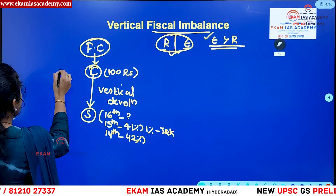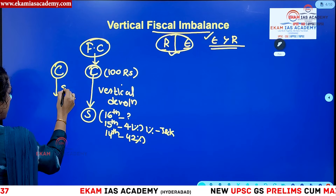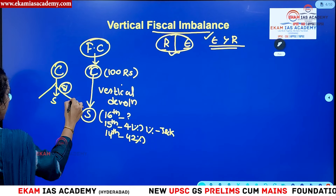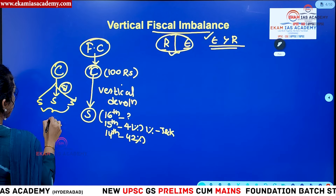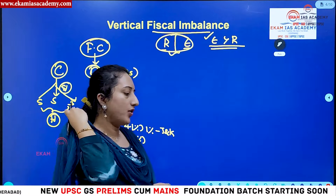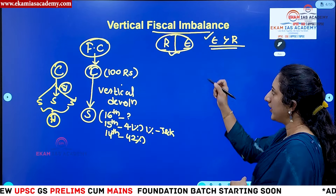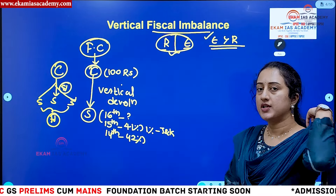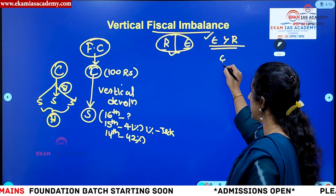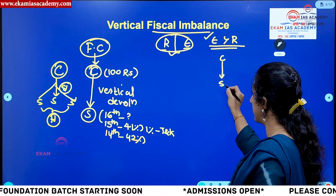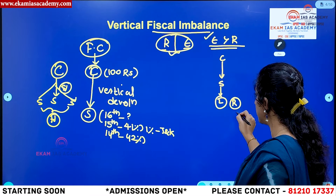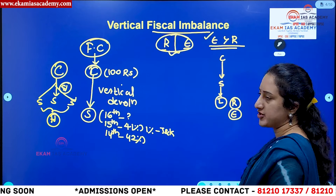Then what is horizontal devolution? After funds come from the centre to the states — that is the vertical flow — the money is then divided among different states. The ratio between different states is what we call horizontal devolution. If states are earning their revenues adequately and spending accordingly, there won't be much of a problem.